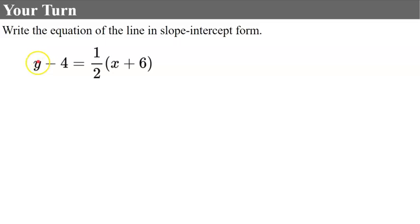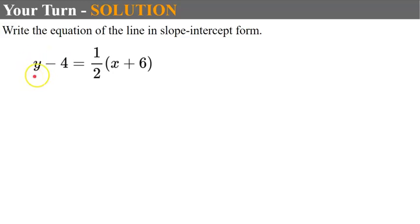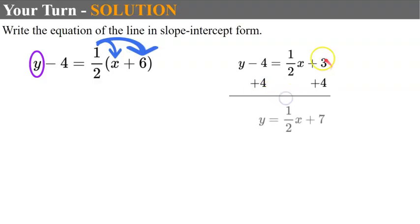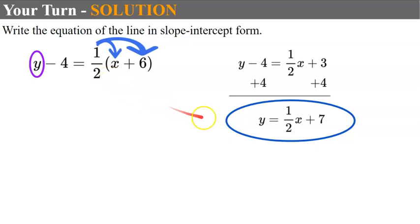Your turn again — write the equation of this line in slope-intercept form. Pause and come back when done. Welcome back. You'll learn in the next video that this is point-slope form, but to convert to slope-intercept form we solve for y. First, distribute 1 half to x and to 6: y subtract 4 equals 1 half x plus 3. Then add 4 to each side: y equals 1 half x plus 7. These are equivalent equations, and now we can identify the slope as 1 half and the y-intercept as 7.